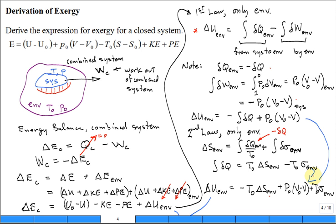Here's a derivation of the expression of the exergy for a closed system. We start the derivation by considering a system that's at current temperature T and P, with an environment surrounding the system at temperature T naught, P naught. We're very much interested in calculating the work that comes out of the combined system — meaning the system and its environment — that can be used to lift a weight in a gravitational field, turn a shaft, or do some other useful work.